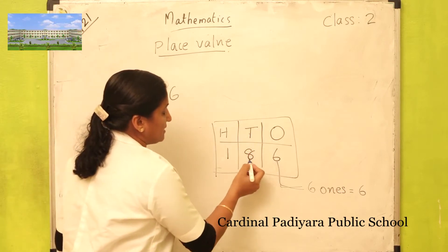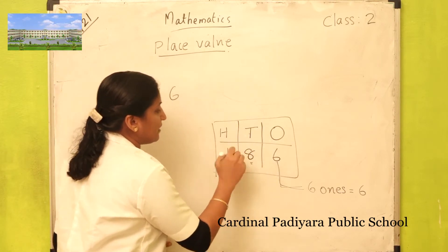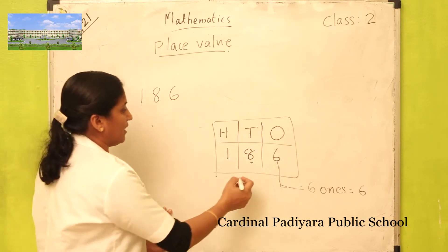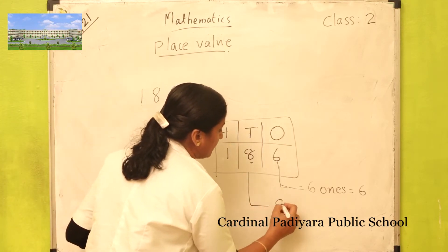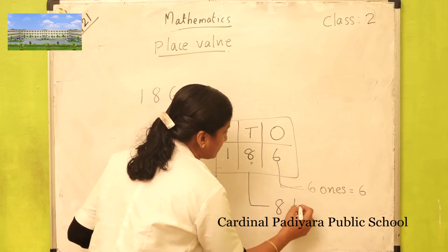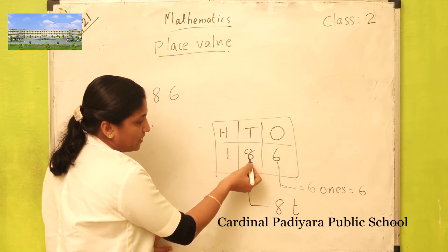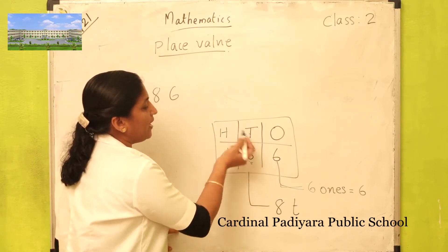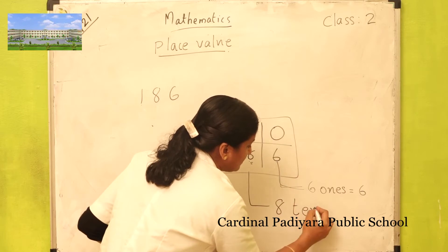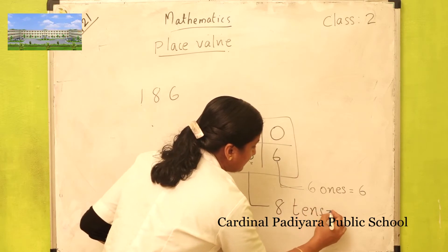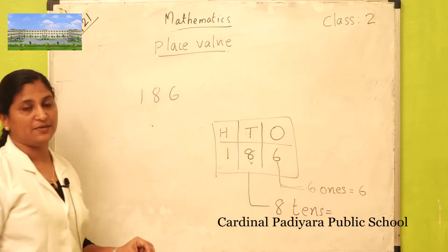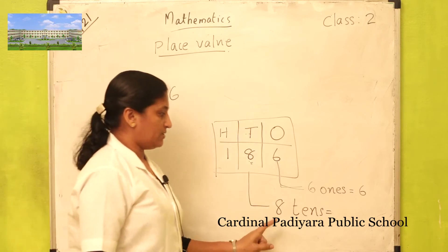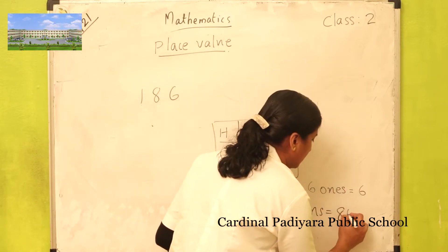What is the place value of eight in one hundred eighty-six? Eight is in tens place. How many tens? Eight tens. Eight tens is eighty.